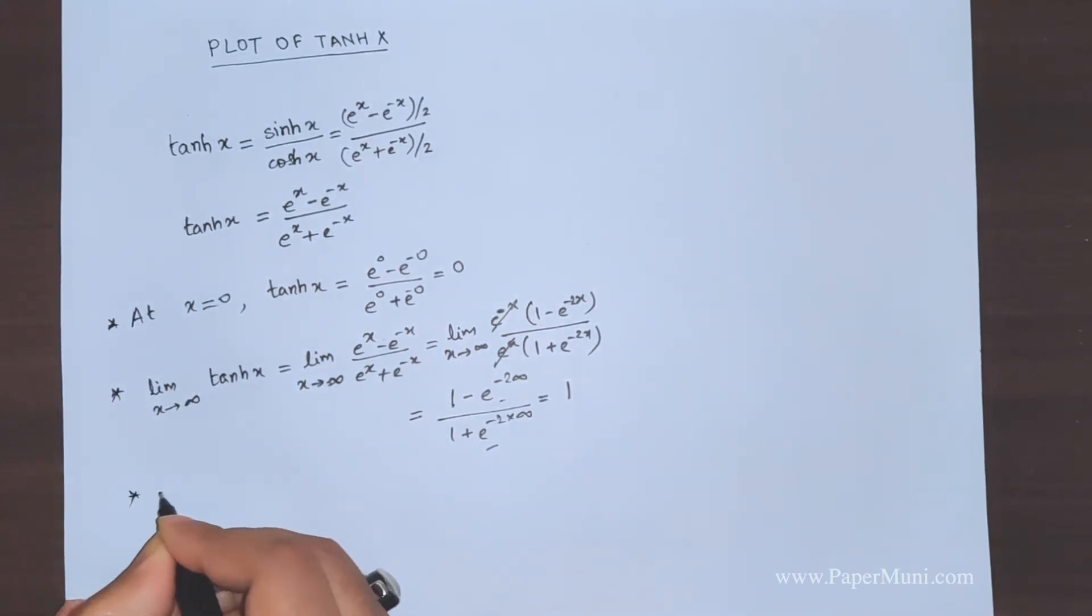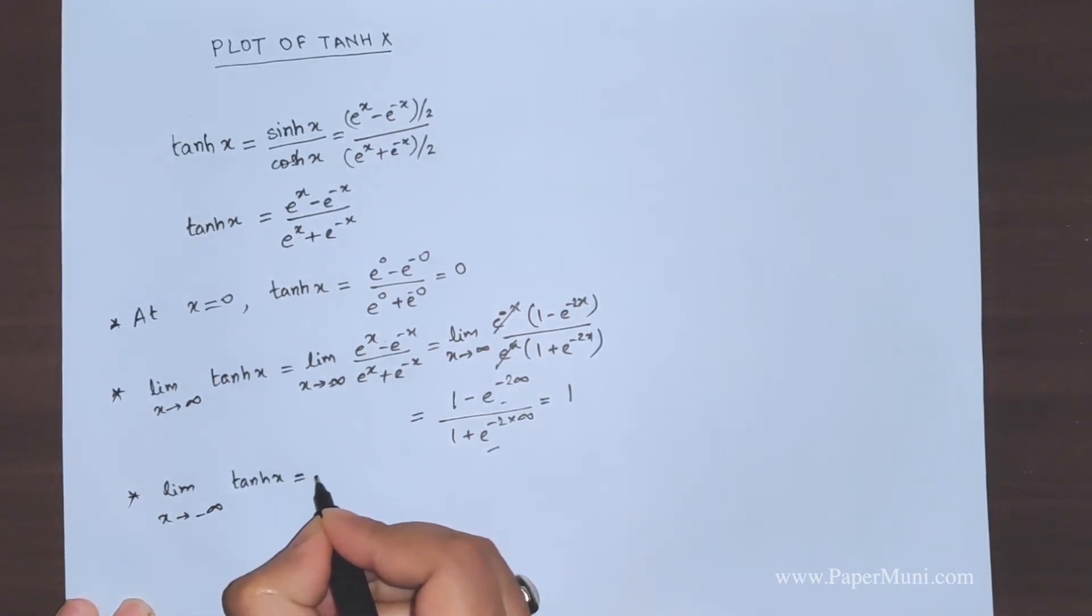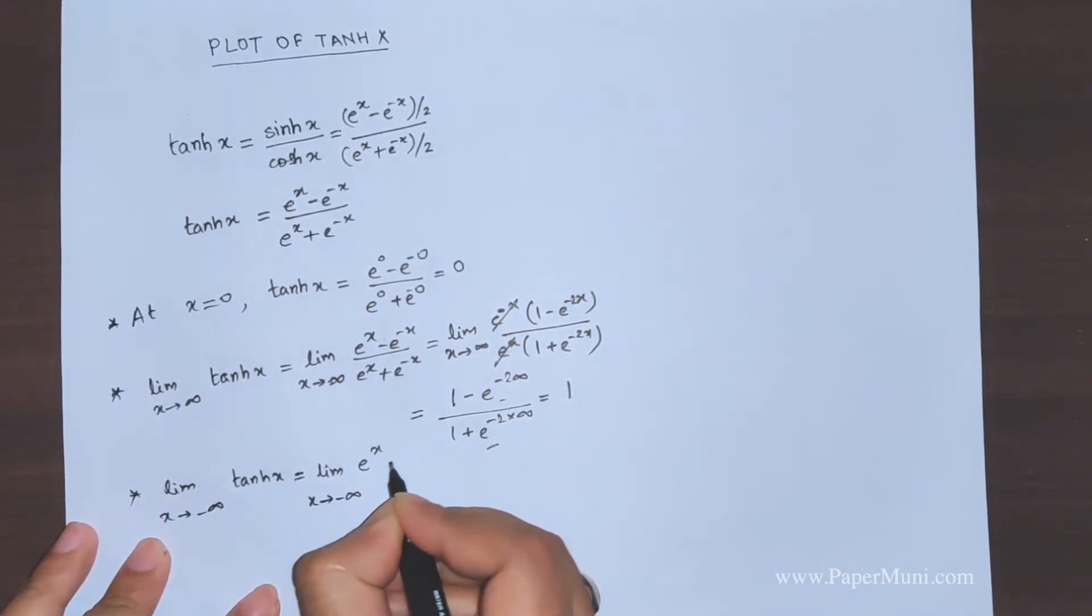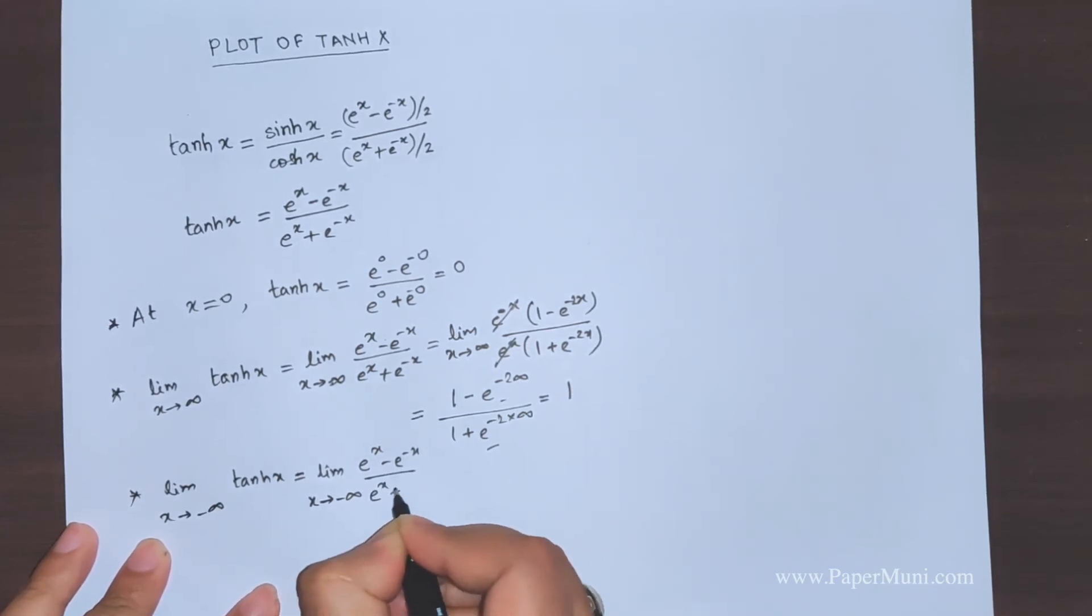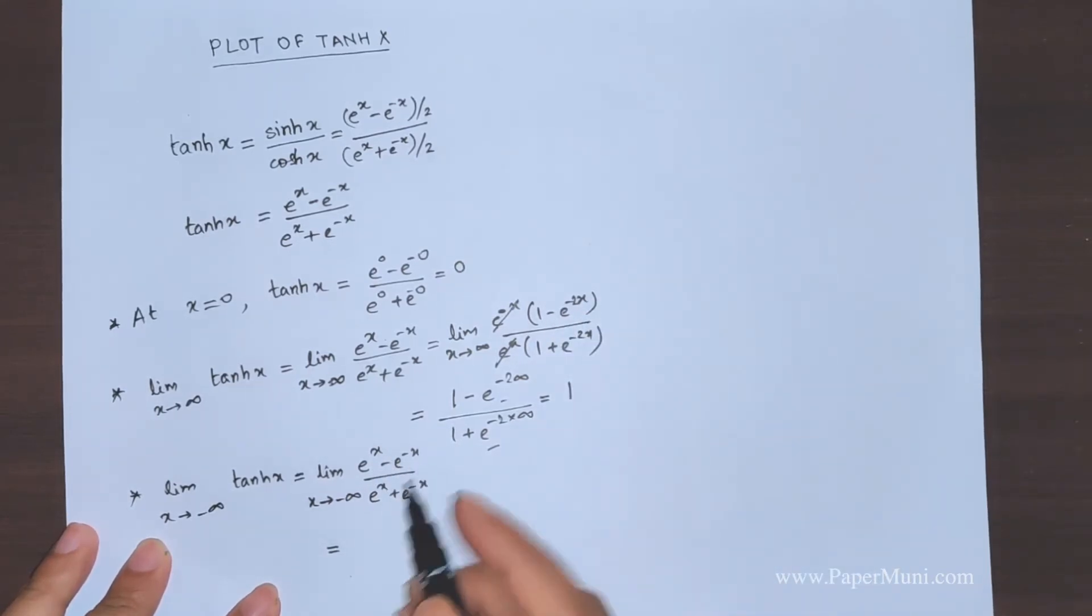Now we take x tending to minus infinity. Tanh x in exponential format is (e^x - e^(-x))/(e^x + e^(-x)). We'll look for terms with positive power in the exponential. We'll take e^(-x) as common. This gives e^(2x) - 1.